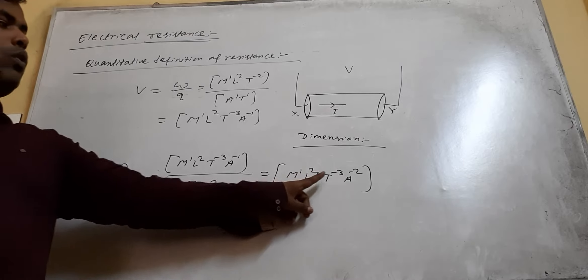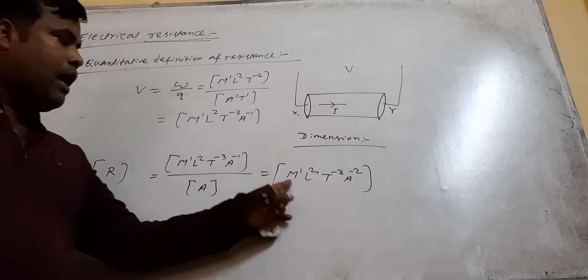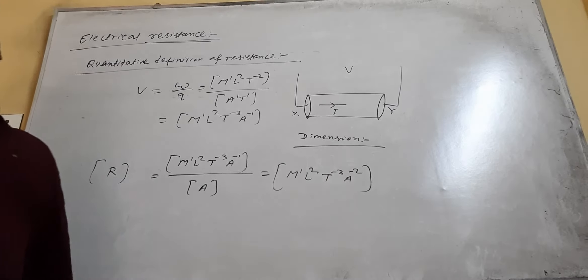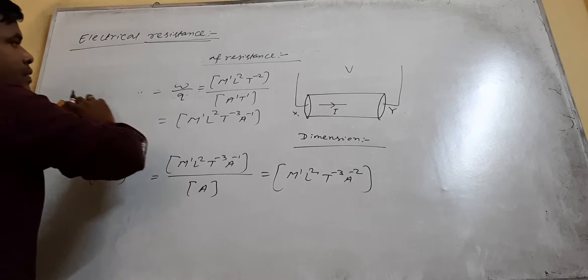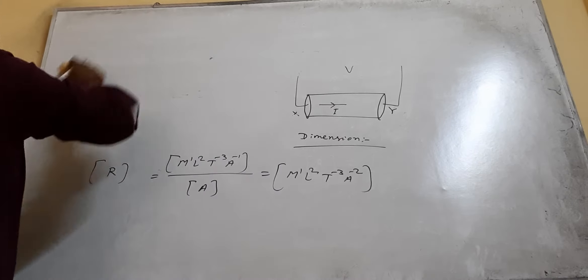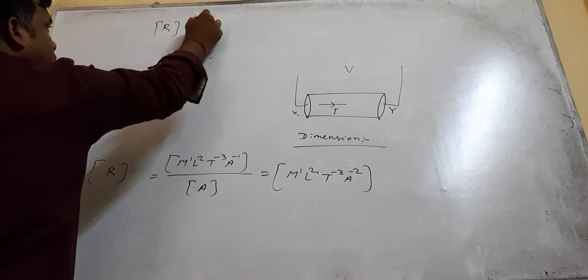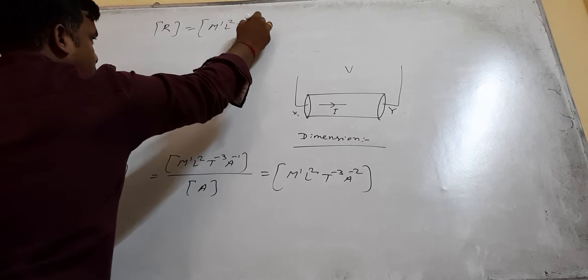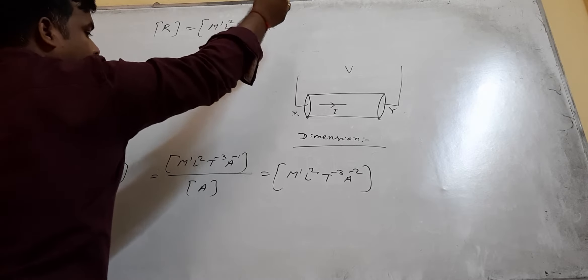So the dimensions of resistance are 1, 2, -3, -2 in terms of mass, length, time, and current respectively. The resistance dimension is M1L2T-3A-2.